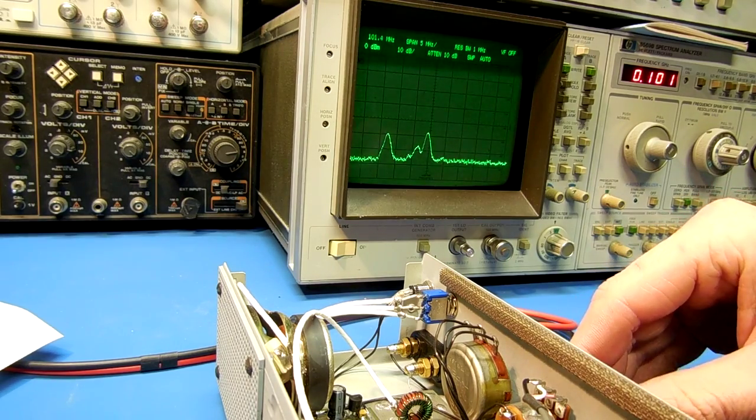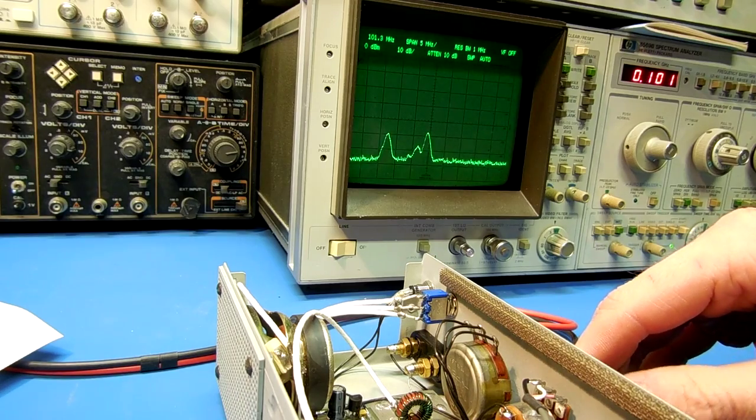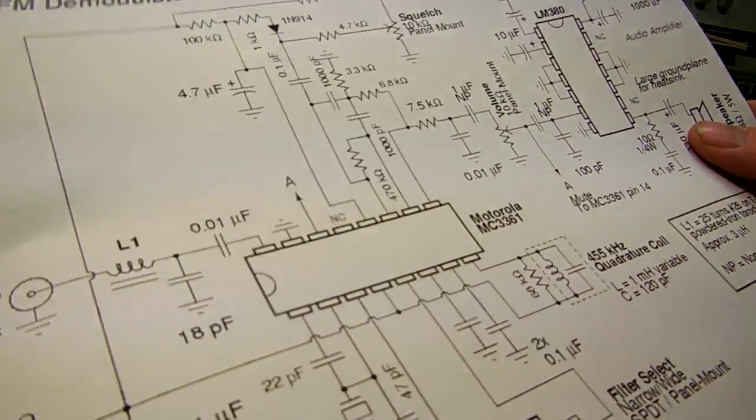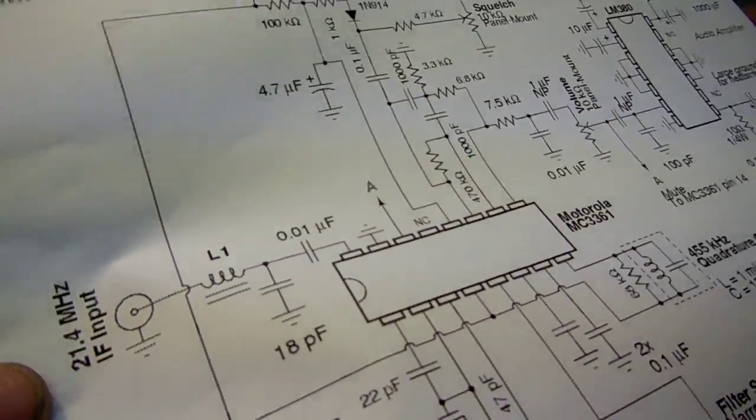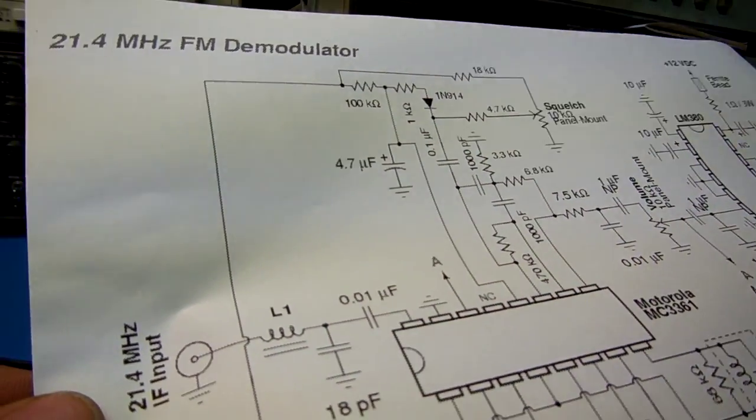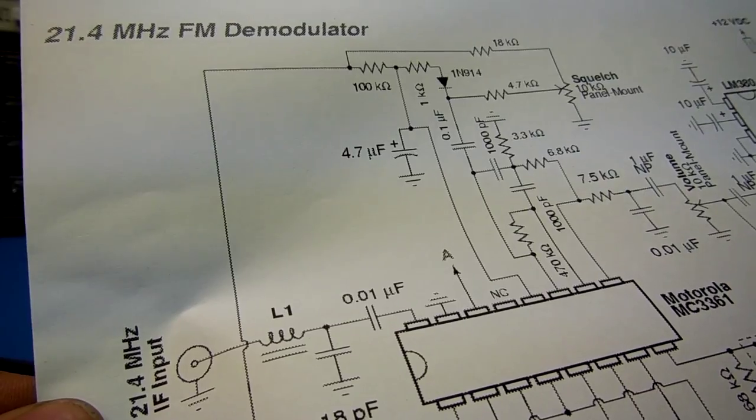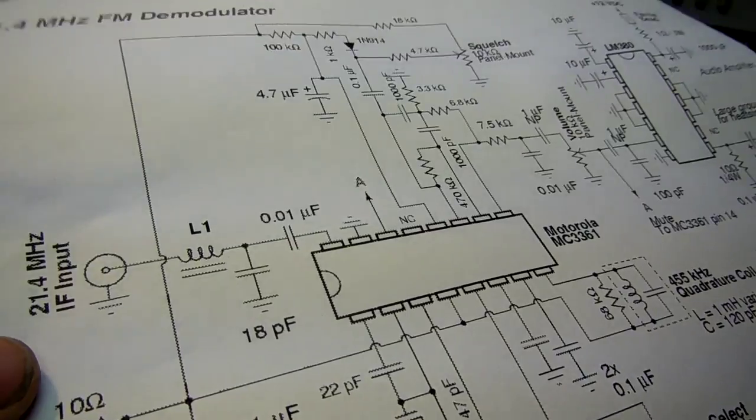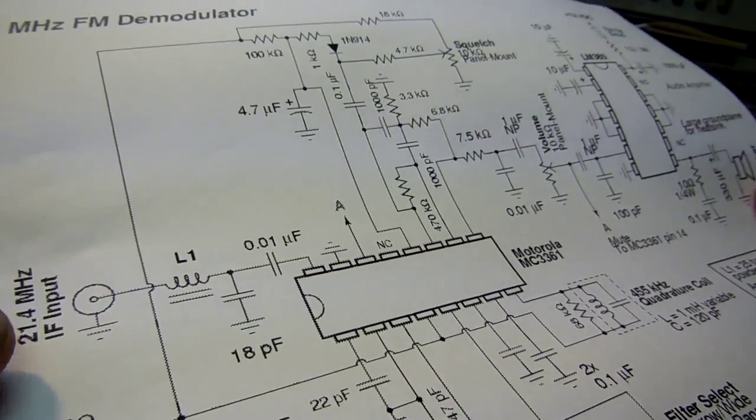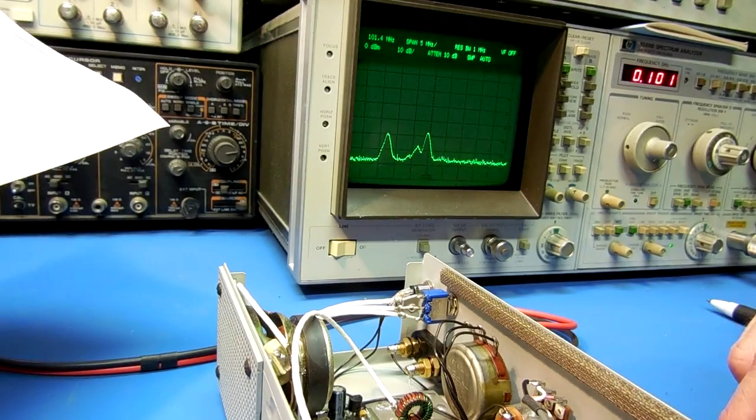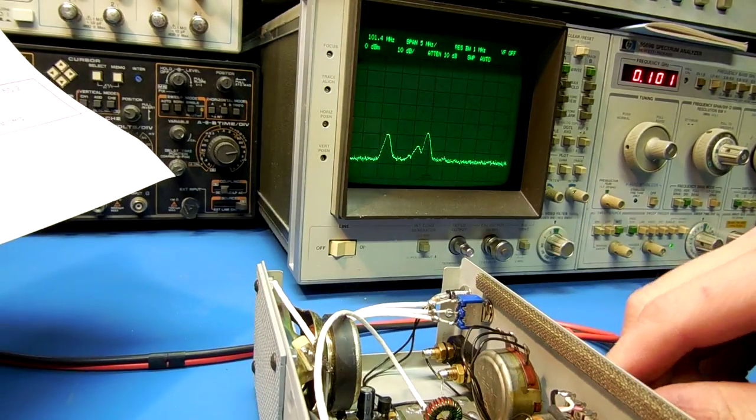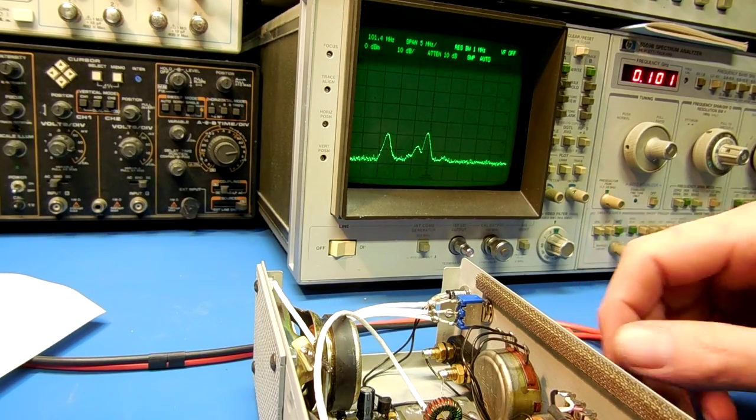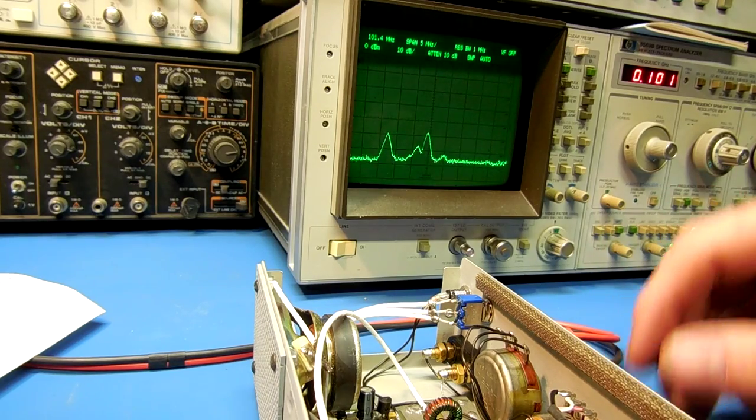That's negative 80 dBm as you can see it's pretty much full quieting already. These chips don't like having lots of amplification before them. You can have like an external amplifier, keep it around 10 dB or so. Too much gain will actually cause distortion and intermodulation products. It has a very low third intercept so as you can hear this is negative 80 dBm which is pretty darn good. There's negative 50 dBm, no problems.